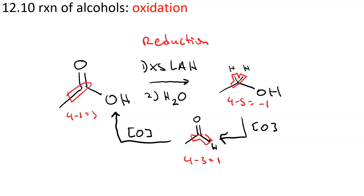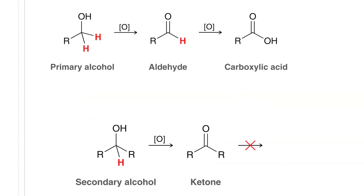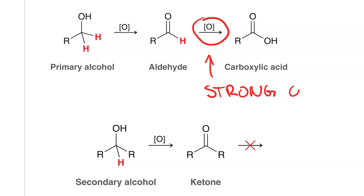What are the oxidizing agents we're going to use? If we start with a primary alcohol, we need a moderately strong oxidizing agent to get to an aldehyde, but to get completely oxidized — from an aldehyde to a carboxylic acid — we need something really strong. If we have a secondary alcohol, we can oxidize to a ketone but cannot go any further, because we don't have a second proton at that point to remove.